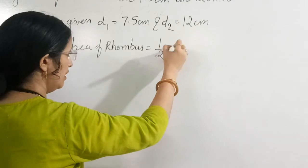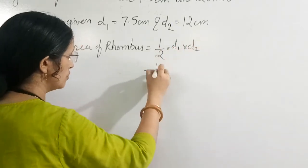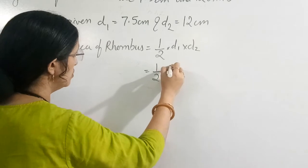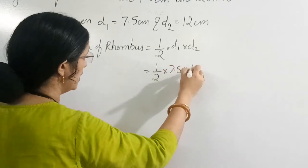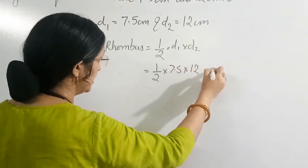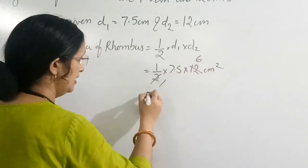It is equal to half into D1 into D2. So what it will be? Half into 7.5 into 12 cm square.